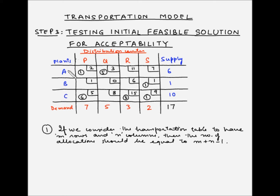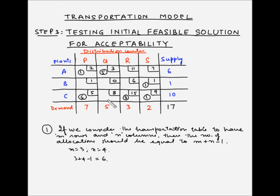In our case, we have three rows so m equals 3, and four columns so n equals 4. As per this condition, the total number of allocations should equal m plus n minus 1, which is 3 plus 4 minus 1 equals 6. In our case, we have 1, 2, 3, 4, 5 and 6 allocations, so this condition is being met satisfactorily.